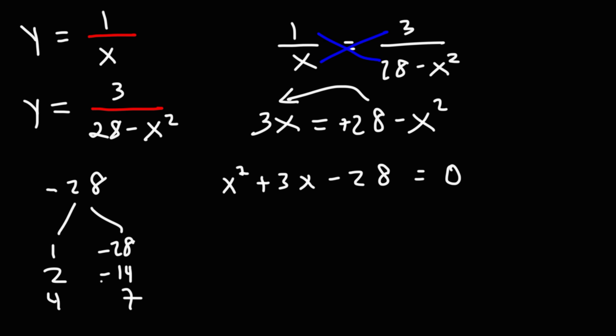Now, one of these pairs of numbers has to have a negative sign to multiply to negative 28. Now, negative 4 times 7 is negative 28, but negative 4 plus 7 is positive 3. This pair works. So to factor it, it's going to be x minus 4 times x plus 7.